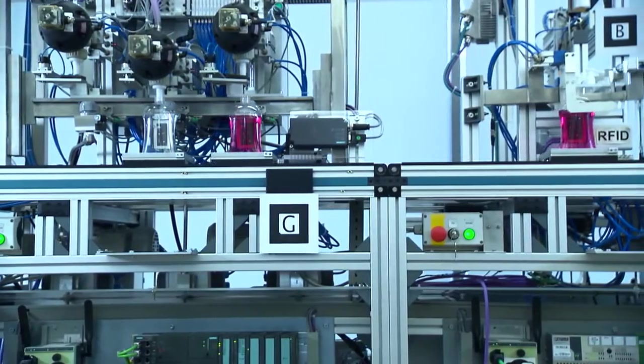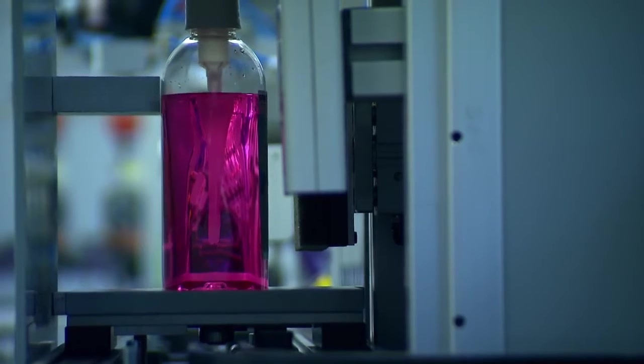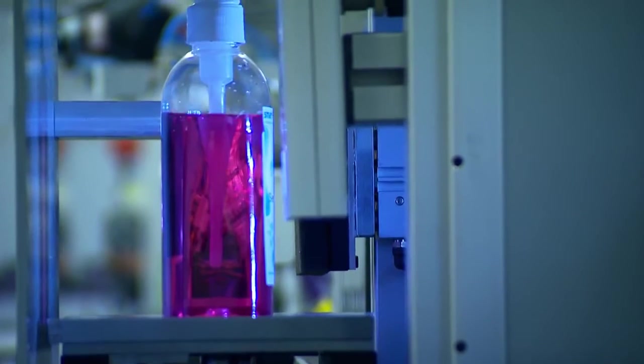At each station, the bottle communicates directly with the machine, telling it how it has to be processed. At the end, a computer checks whether the bottle has actually been produced as desired.